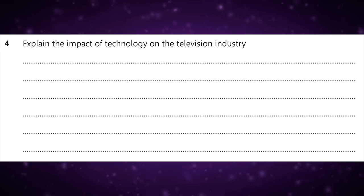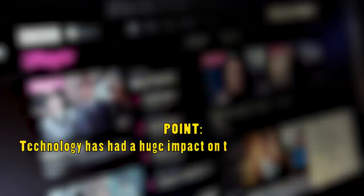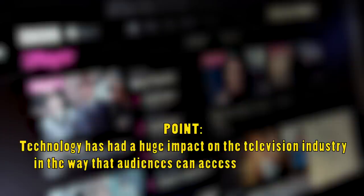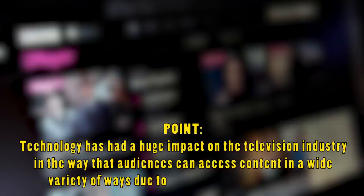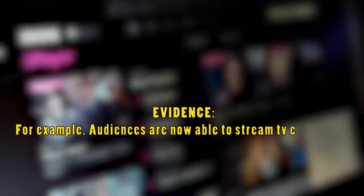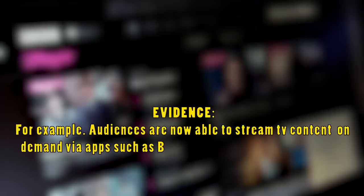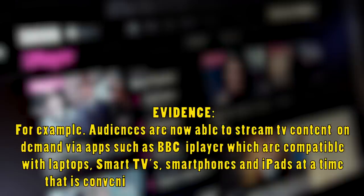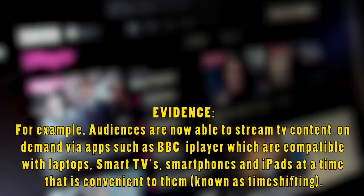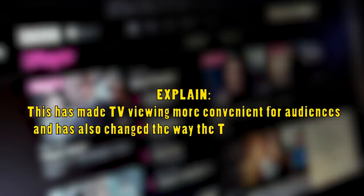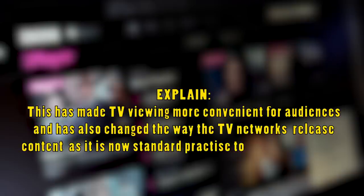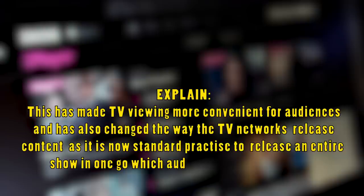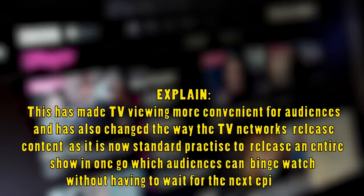Here is an example paragraph: 'Technology has had a huge impact on the television industry in the way that audiences can access content in a wide variety of ways due to technological convergence. For example, audiences are now able to stream TV content on demand via apps such as the BBC iPlayer, which are compatible with laptops, smart TVs, smartphones and iPads, at a time that is convenient for them — this is known as time shifting. This has made TV viewing more convenient for audiences and has also changed the way that TV networks release content, as it is now standard practice to release an entire show in one go, which audiences can binge watch without having to wait for the next episode.'